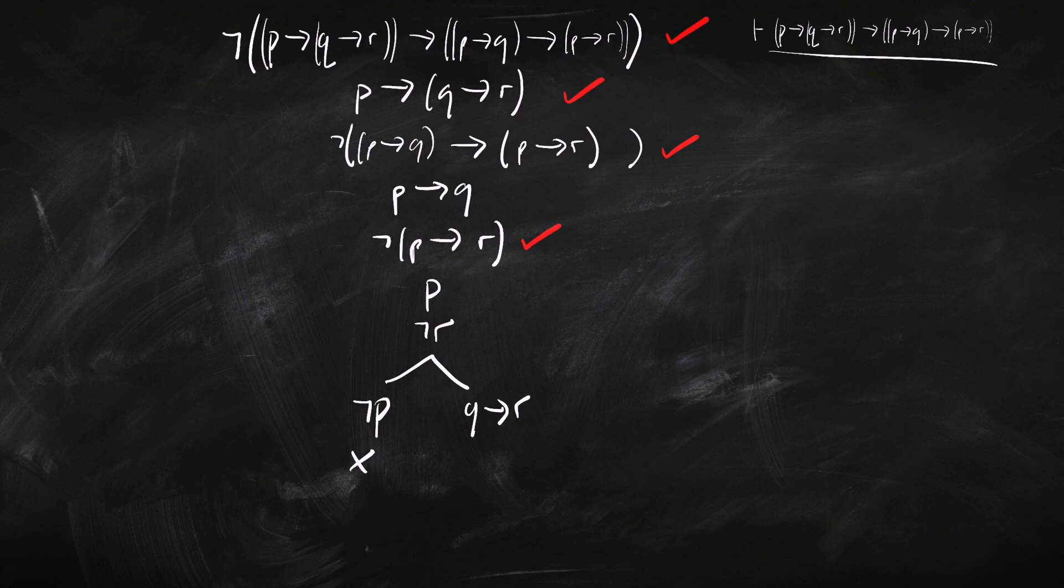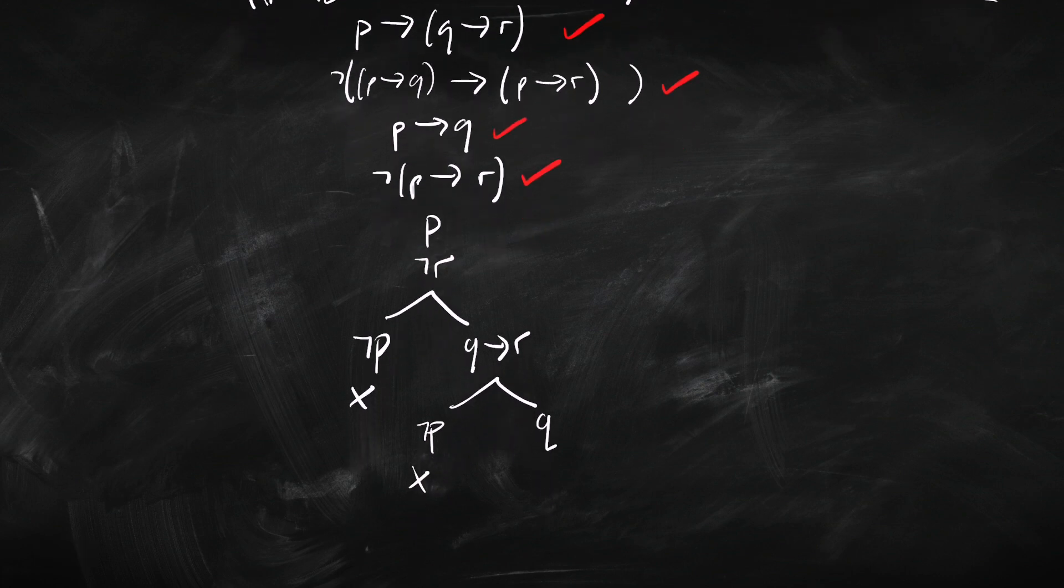Again, it doesn't really matter which one we pick. So, let's just, again, go with the one at the top. So, we get not P on the left, and we get Q on the right. So again, here we've got not P, there we've got P. So, this one closes. We're going to need a little bit more room here. We'll tick that one off to say we're done. The one we've got remaining is this one here. Same deal. We're going to get not Q on the left, and we're going to get R on the right. So, here we've got not Q and Q, so that branch closes. And here we've got R, and previously we had not R, so that one closes.